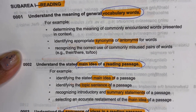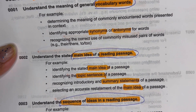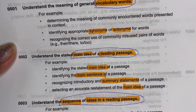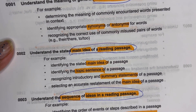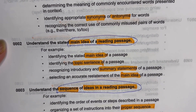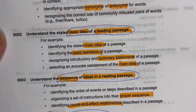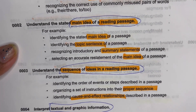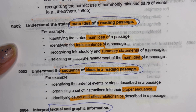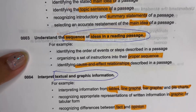Let's get started with Reading. You need to practice vocabulary — determining the meaning of commonly encountered words presented in context, synonyms, antonyms for words, and recognizing the correct use of commonly misused pairs of words. You also need to know the main idea of a reading passage — that is, the topic sentence, summary statements, and main idea of a passage.